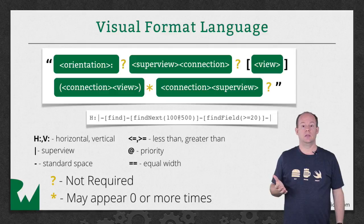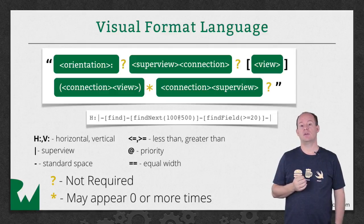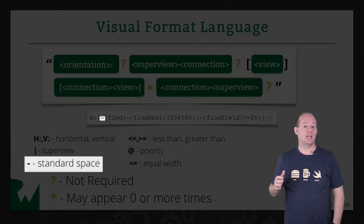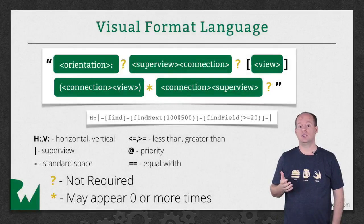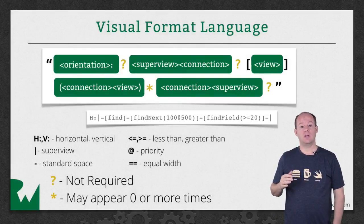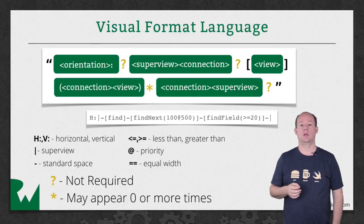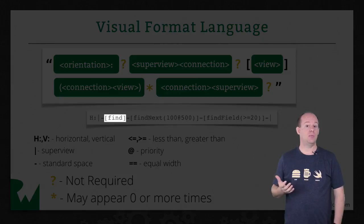The pipe character is optional as well. You can have a Visual Format Language string that just describes the relationships between sub views. A dash represents the standard spacing. If you have no dash, that represents a spacing of zero. If you have a dash, then a number, and then another dash, that represents a spacing equal to the number. A name in brackets represents a view.